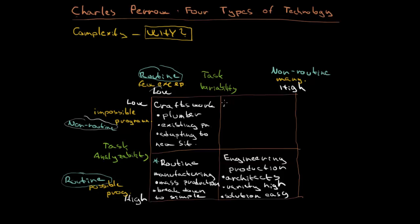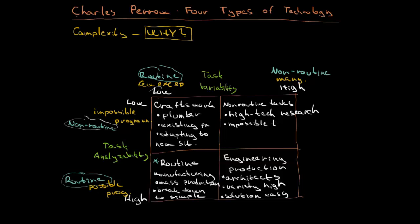The last point is the non-routine tasks. Here imagine high-tech research. The tasks are going to be very complex — not only because the number of unexpected situations is high, but also the search activity is high. It is impossible to program or predict what is going to come. The variability is the highest possible, making these tasks extremely complex.